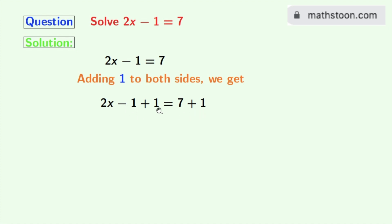As -1 + 1 is 0, we get 2x on the left hand side. And on the right hand side, we get 8.